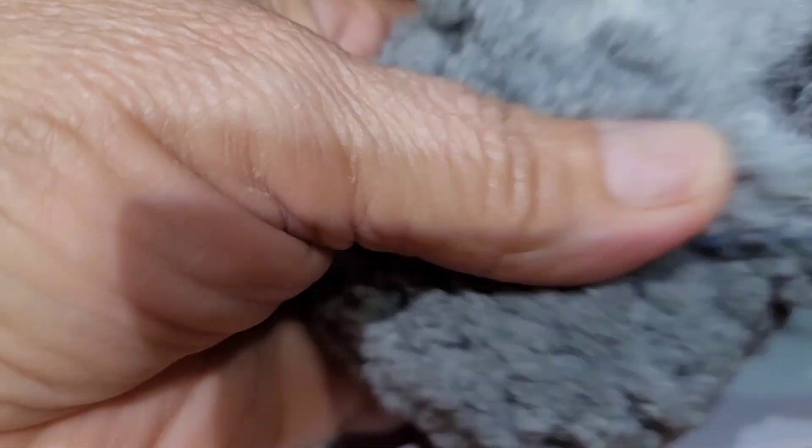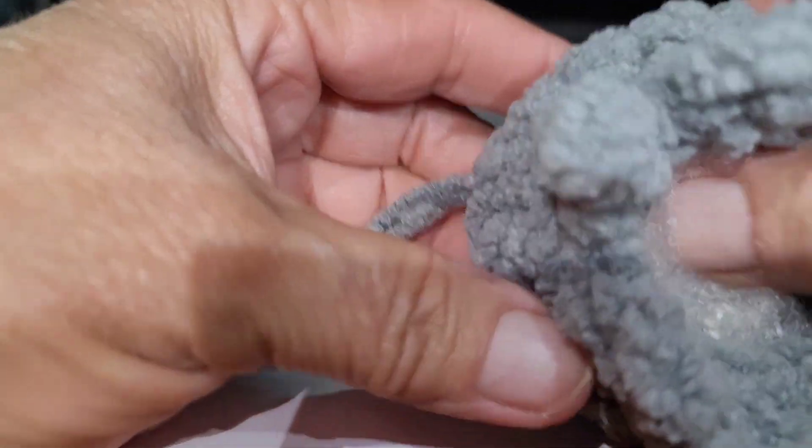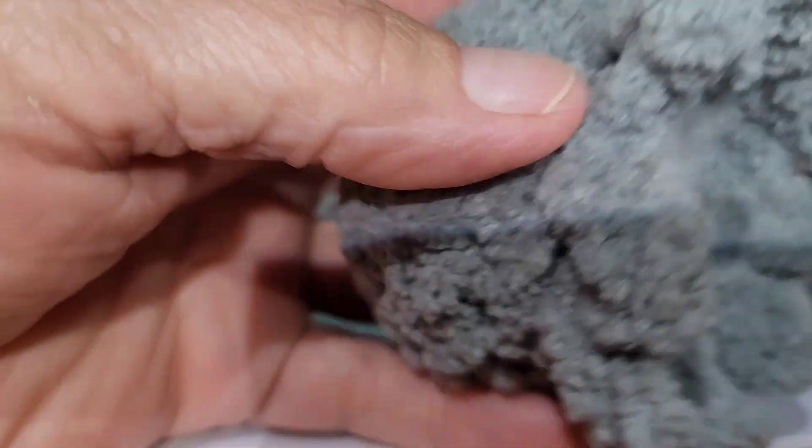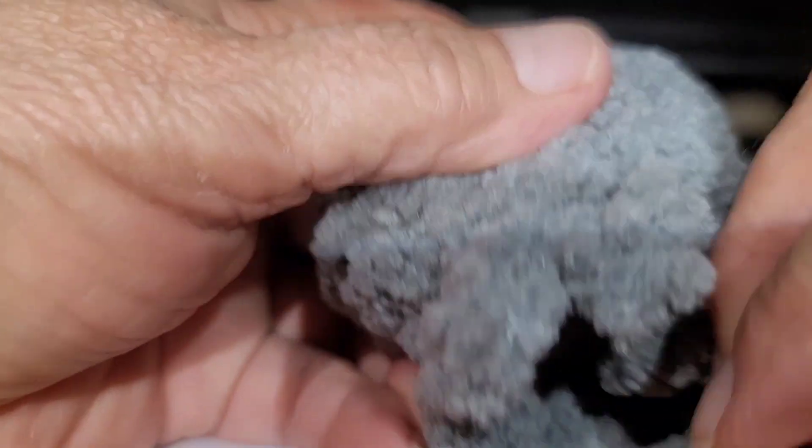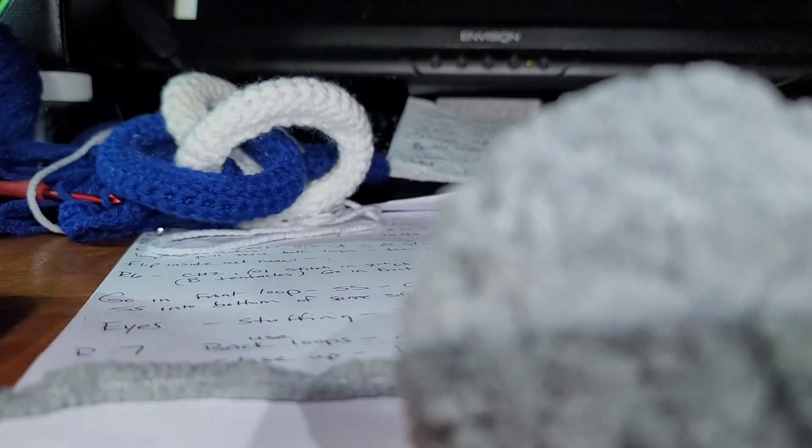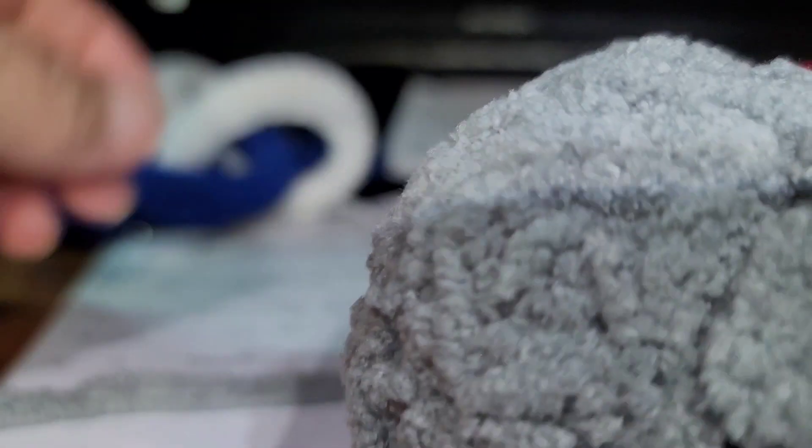Put some stuffing in there. See, push it in there. If you got snap eyes you got to put them in first. And you got to decrease to close the hole which is the last step.